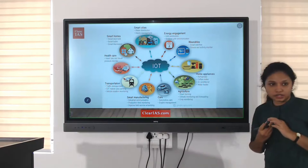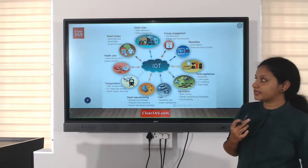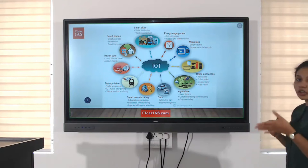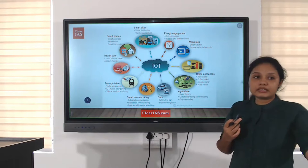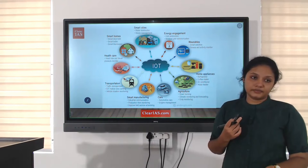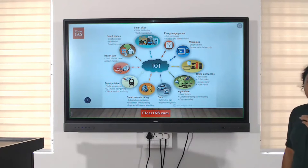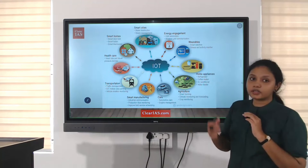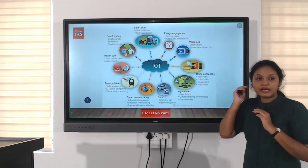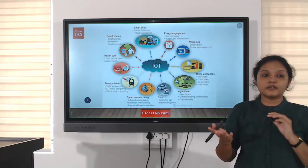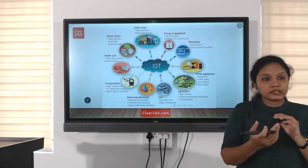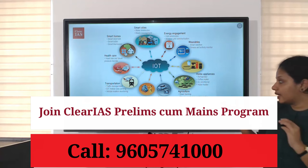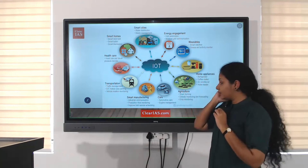Applications of IoT: In energy, it can be used for grid automation and wireless grid communication. In wearables — smart watches, fitness and activity monitors. In home appliances — refrigerators, coffee makers, air conditioners, water heaters. In agriculture — smart farming, climate monitoring, crop monitoring, pest detection, soil moisture sensing, and identifying when fertilizers are needed.